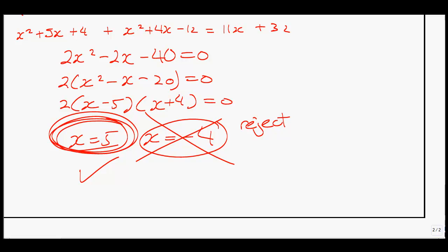To recap this lesson: make sure you get a common denominator, then cancel it all out. Identify your non-permissible values at the start, and once you get a solution, check it against those non-permissible values. That concludes this lesson.